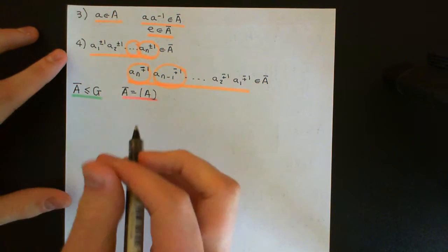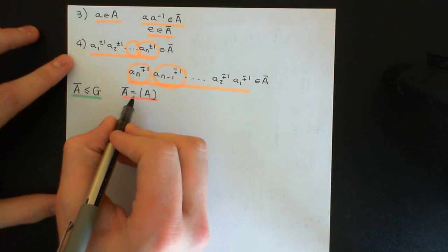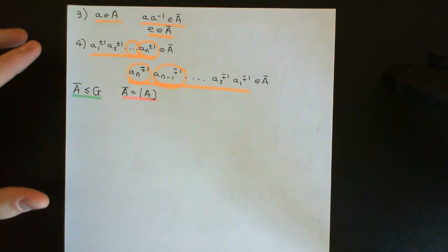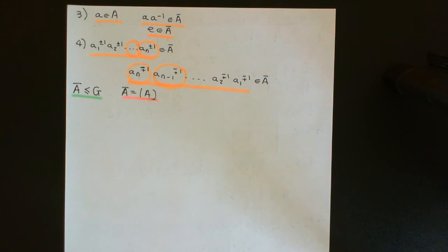So how are we going to prove that these two things are equal to one another? Well, let me spell out the strategy. It's going to be the normal strategy for showing two sets are equal to one another: show that one is contained in the other, and that the other is contained in the first one. If you show containment both ways round, then you can conclude that they're equal to one another.